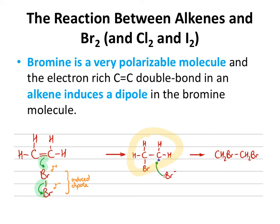Having two carbon–halogen bonds would allow us, if desired, to do the same type of reactions as with a haloalkane on both halogens. For instance, we could turn our dihalogenoalkane into a diol — a molecule with two alcohol groups on adjacent carbons.